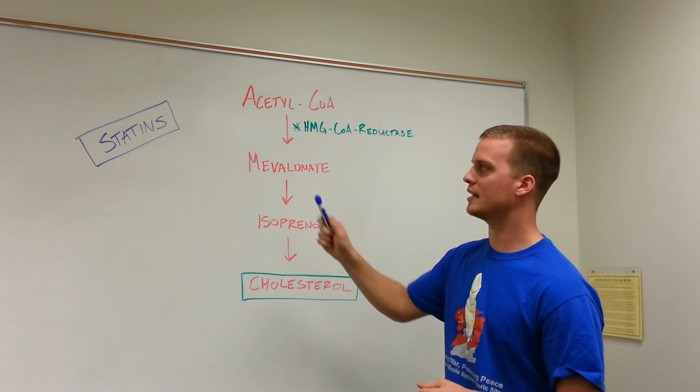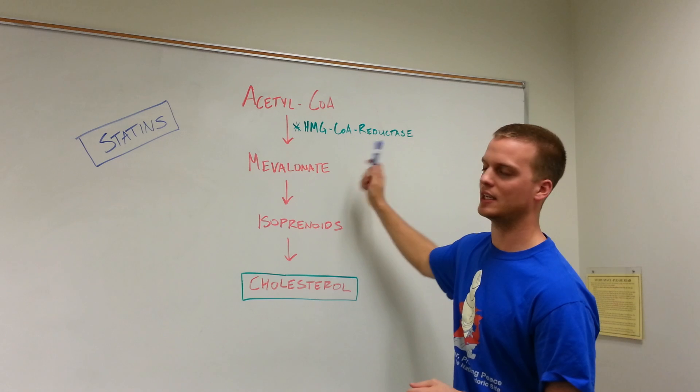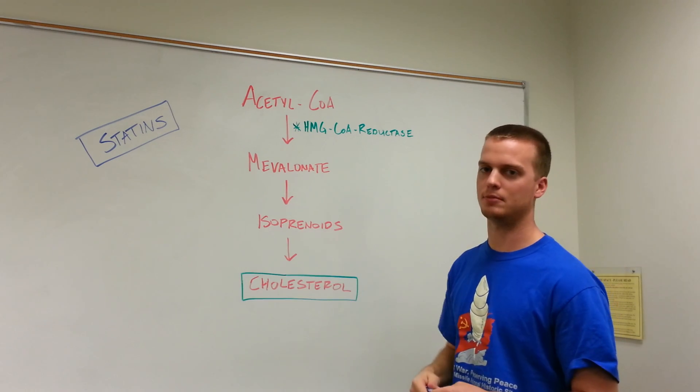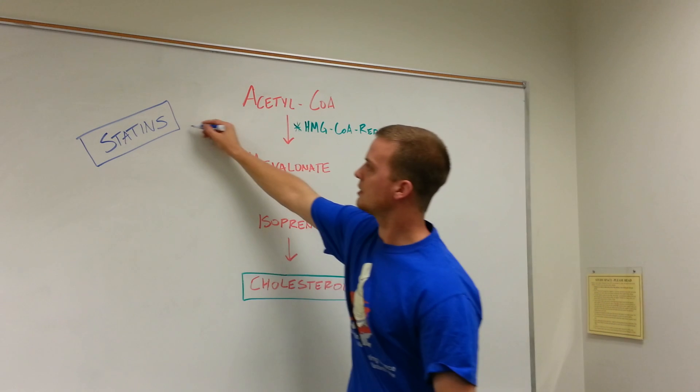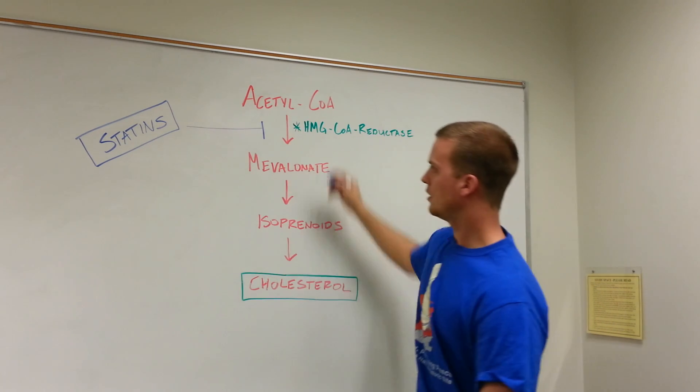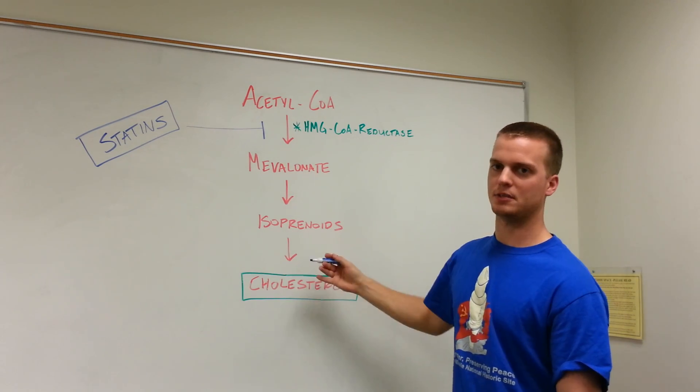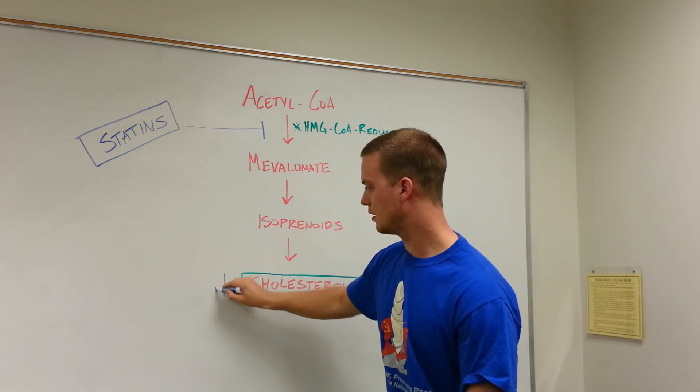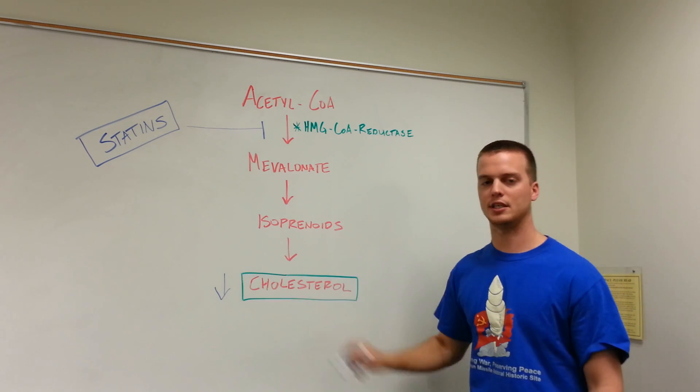Now how do statins work? Statins work by directly inhibiting this enzyme, the rate-limited enzyme, HMG-CoA reductase. So what's that going to do? If you inhibit this, all the downstream events are obviously going to be downregulated, meaning you're going to have less overall cholesterol in your body.